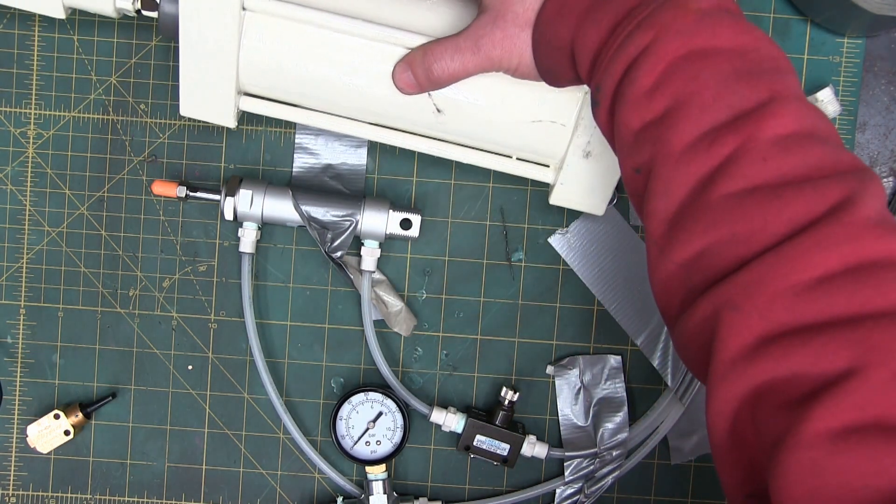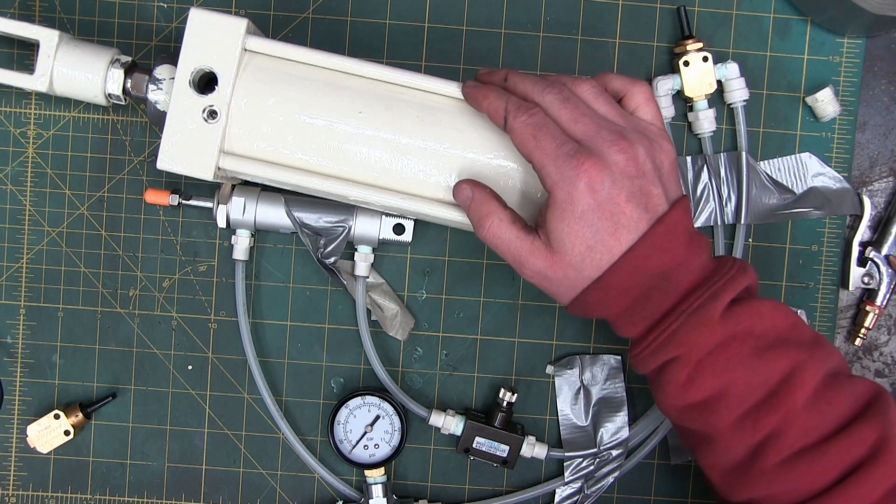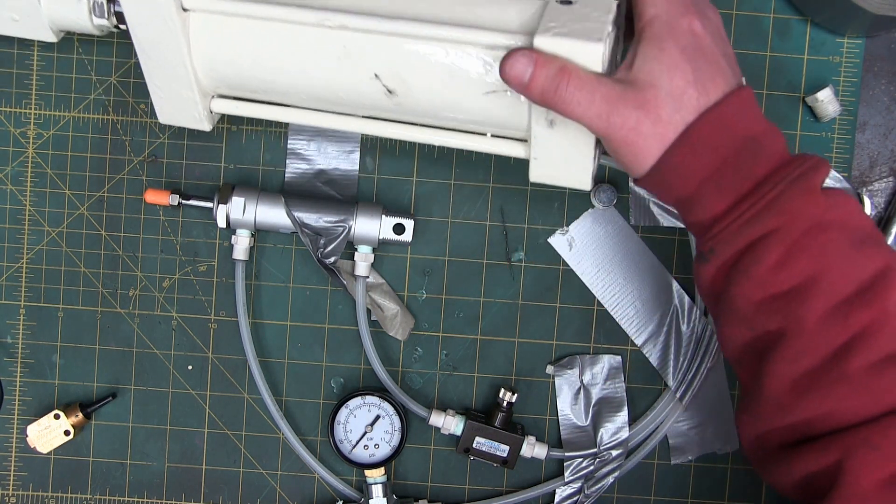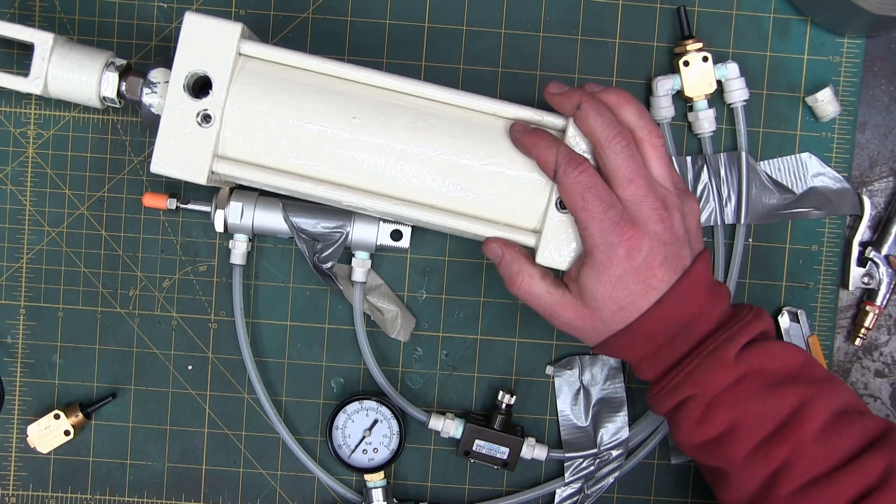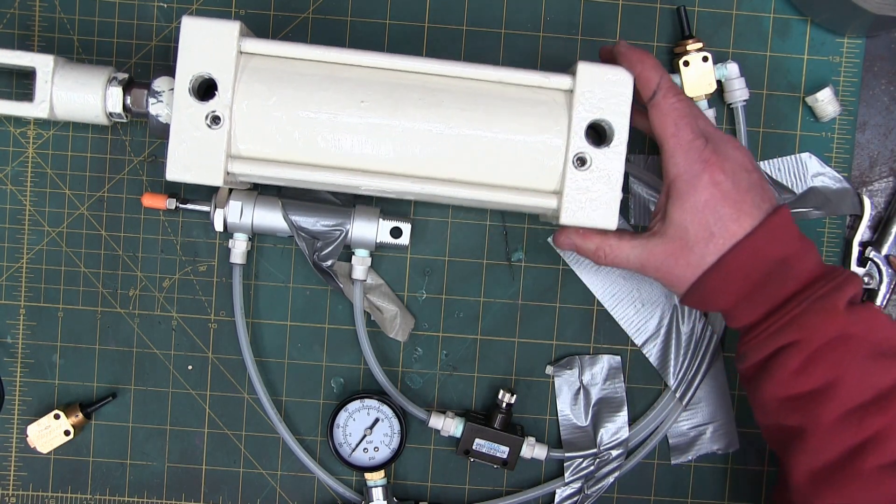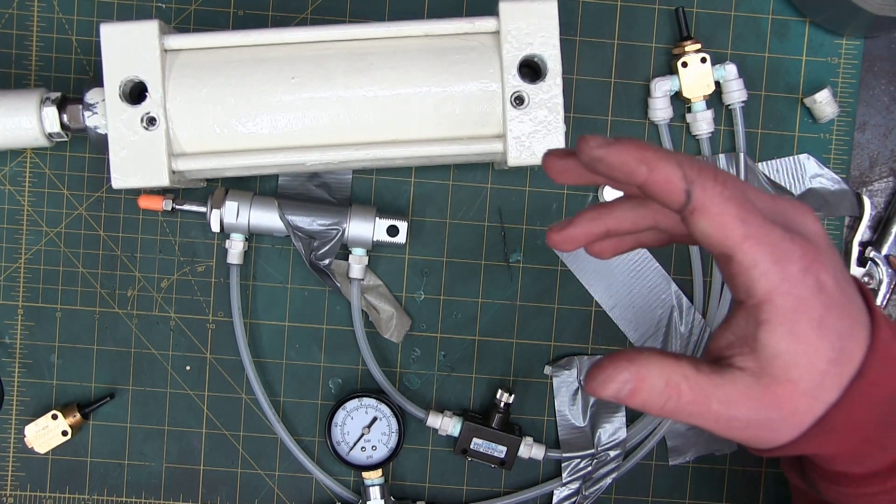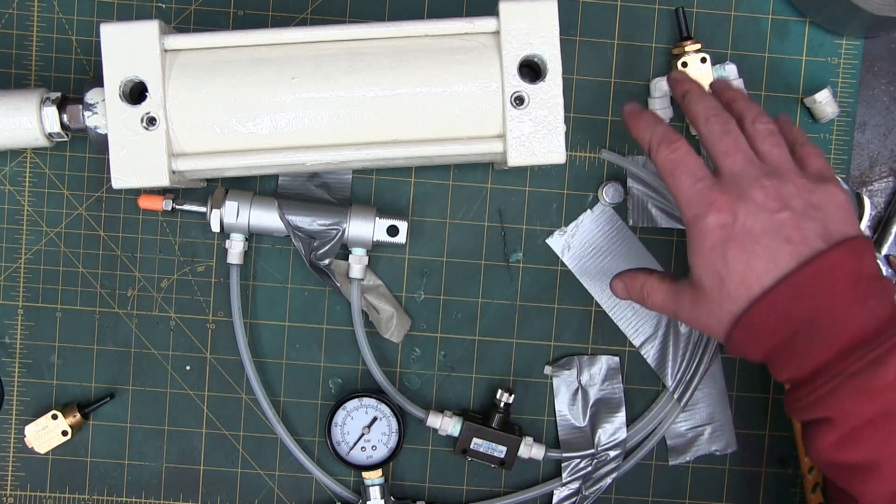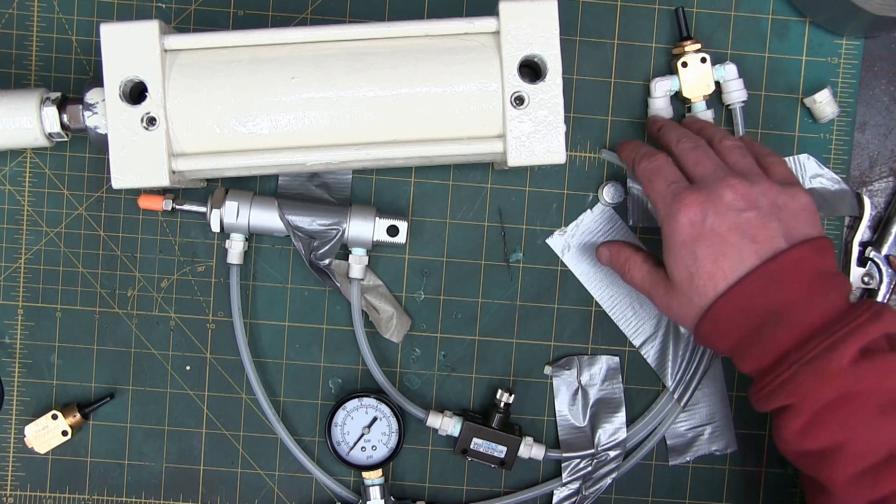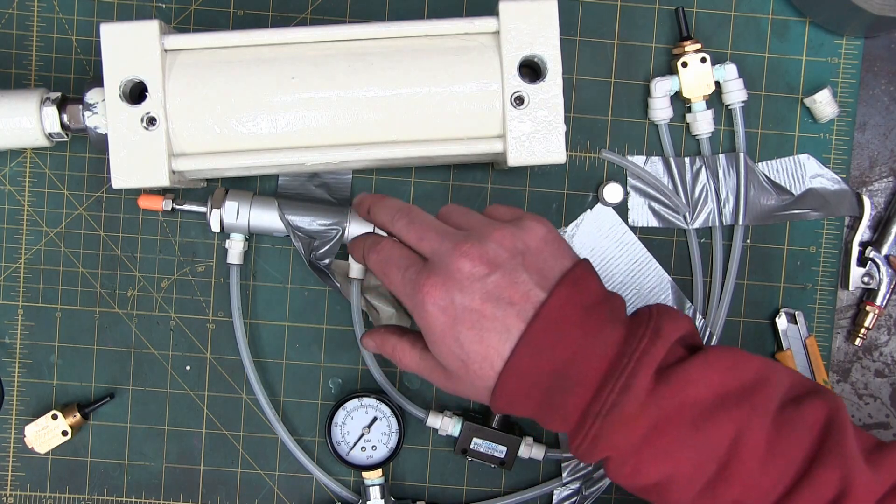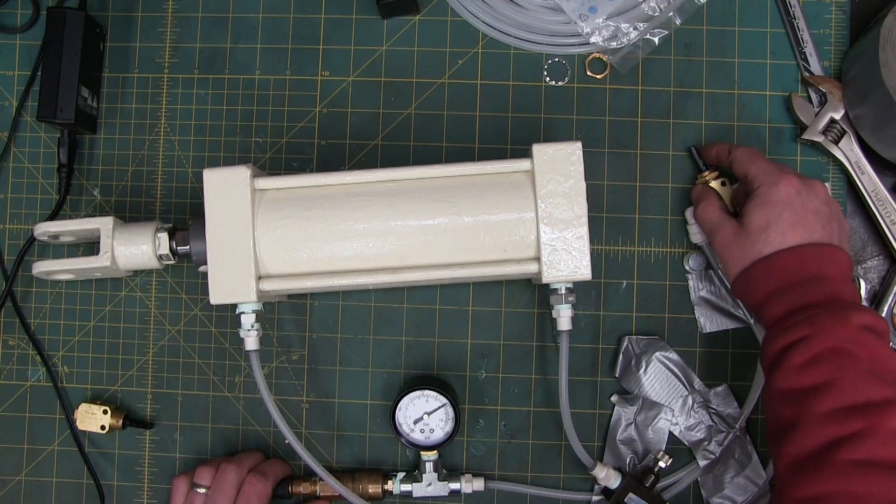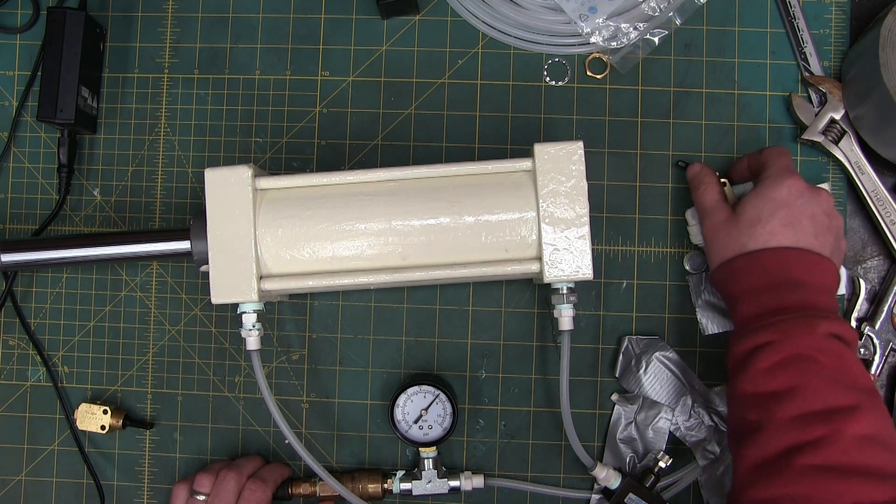This thing, 50, maybe a hundred bucks for a super duper brand. I mean, cheap as chips and just incredible amounts of force. So here's what we're going to do. We're going to use the same circuit, all the same valving, and we're just going to get more force out of it, changing the actuator.